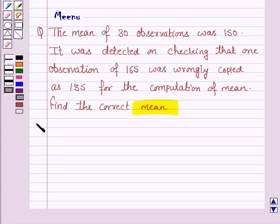Let's now move on to the solution. We know that the mean is given by the formula: sum of all the observations upon the number of observations.